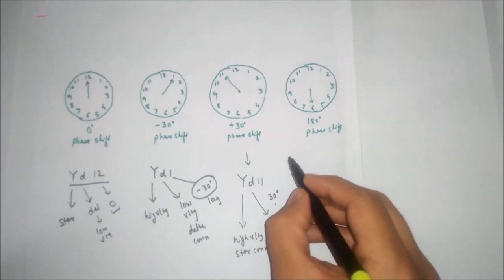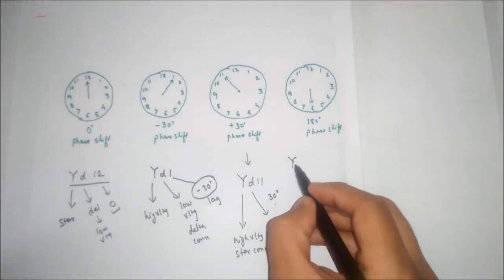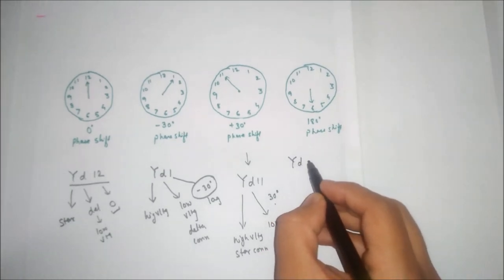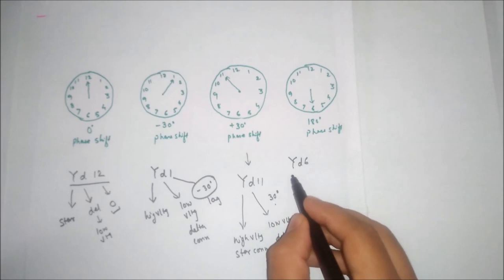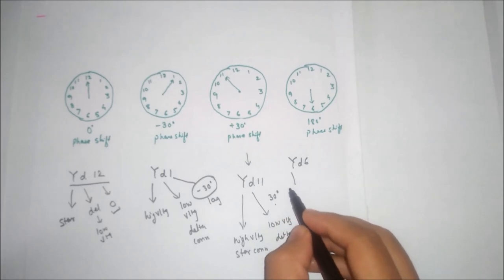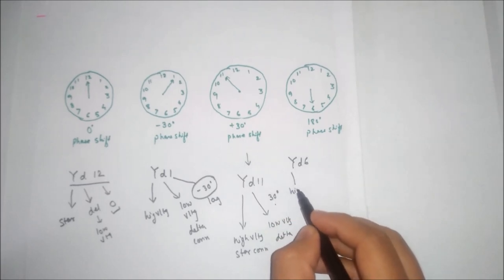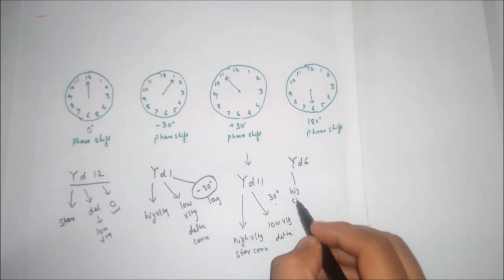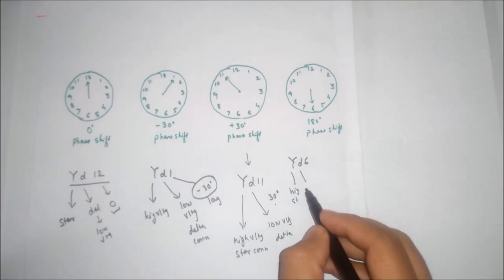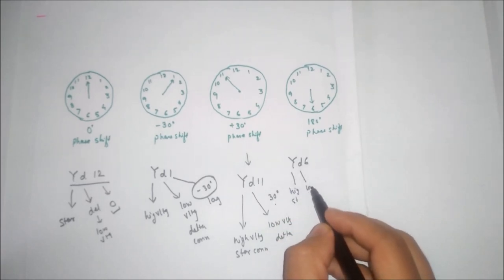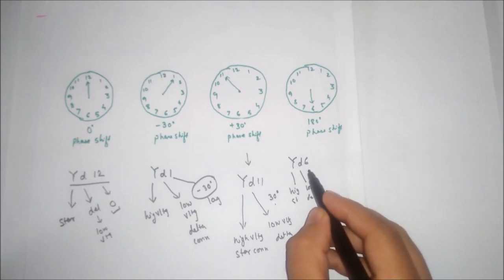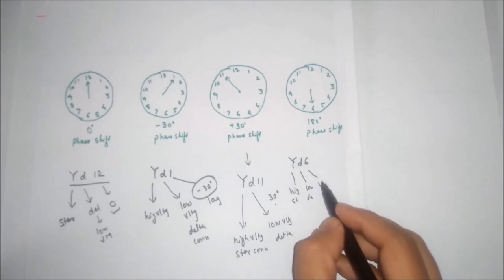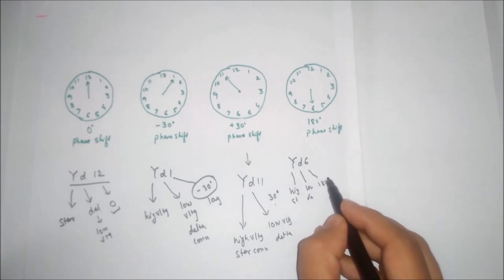YD6 means high voltage star connection, low voltage delta connection, और 6 means 180 degree phase shift।